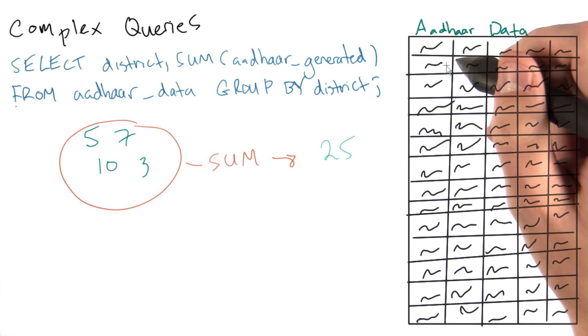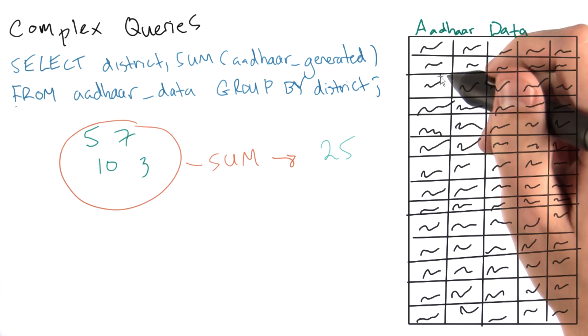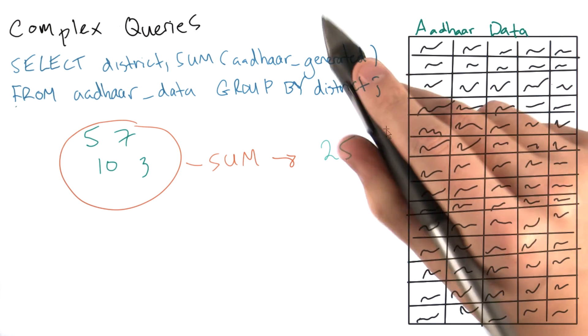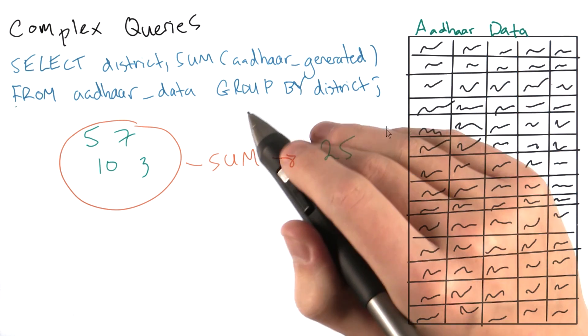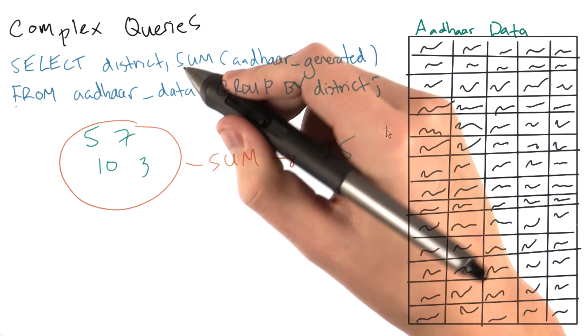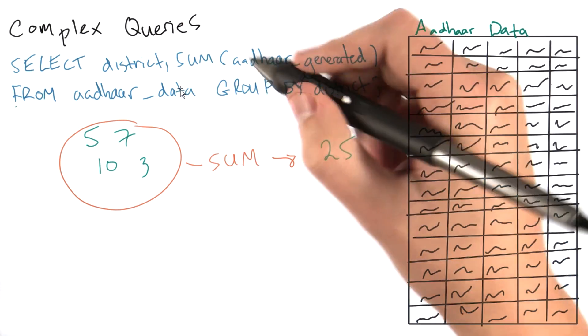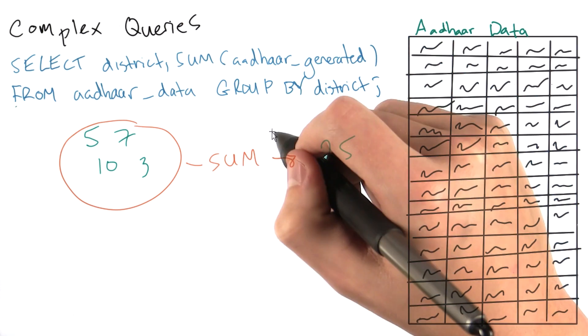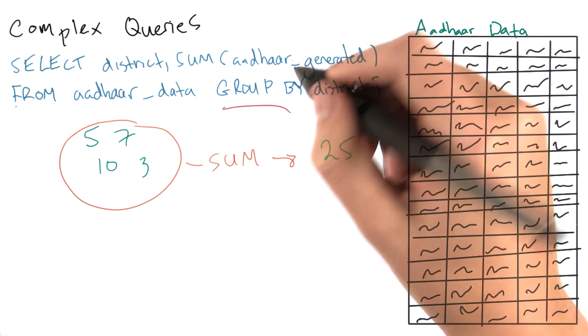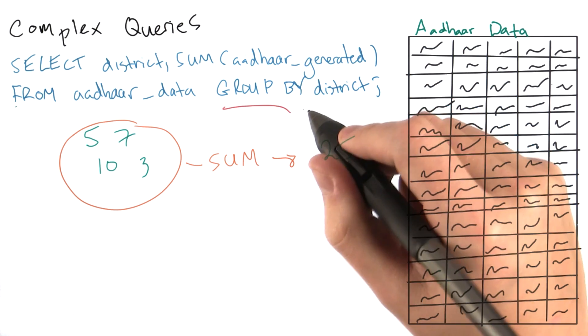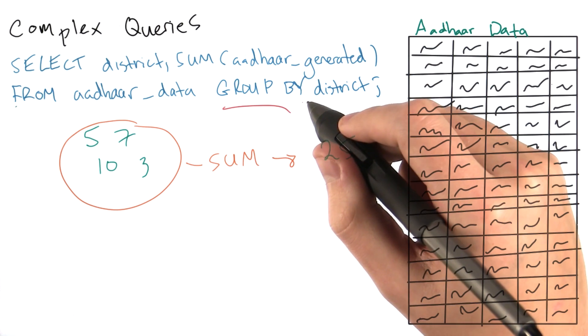So we start with our Aadhar data table, take each district, and sum up the count of Aadhar generated. Now, in order for our results to make sense, we're only going to want one row in our output for each district. So we throw in this GROUP BY clause on the end, which essentially says let's only have one row per district in our results.